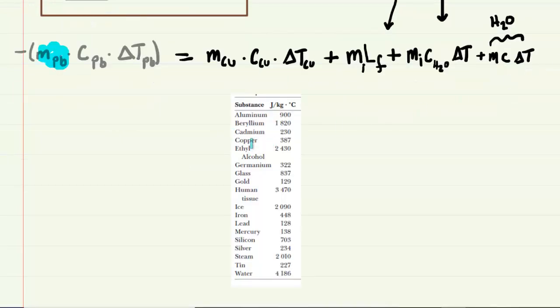So here is a handy reference table we obtained from our textbook. The specific heat of lead we can see is 128 joules per kilogram Celsius. The specific heat of copper is 387. The specific heat of water, liquid water, that is, will be 4,186. Notice we don't need the specific heat of ice because the ice is going to melt and become liquid water. So we would use the specific heat capacity for the liquid water. So those are the values that we'll be plugging in for all of the C values.